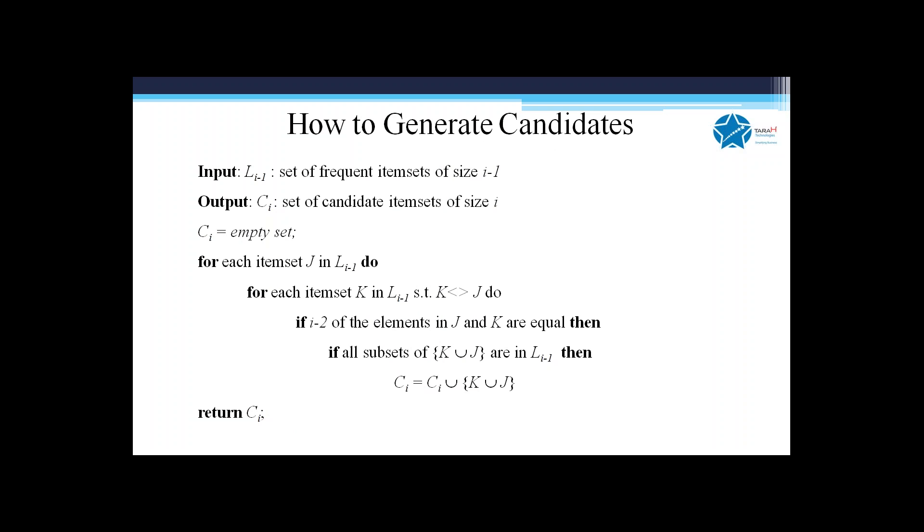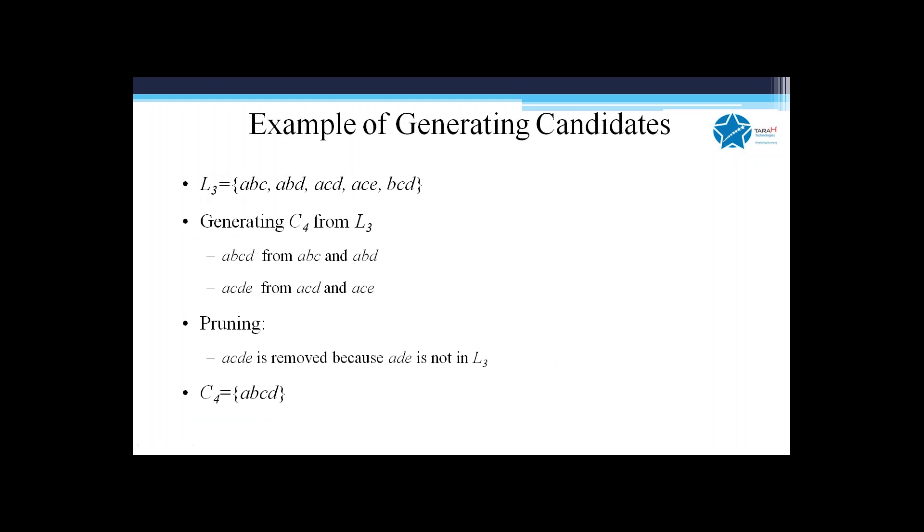Ultimately we get the right K-frequent itemsets. Look at this example: if you take abc, abd, bcd at level three and expand to level four, you can generate abcd, acde.